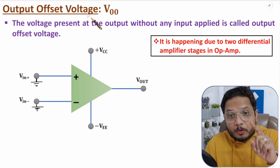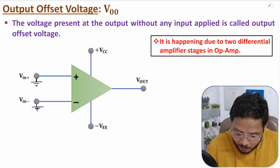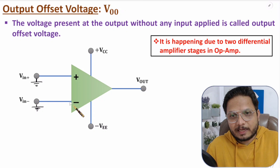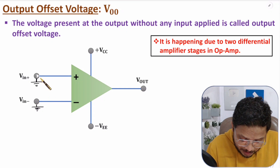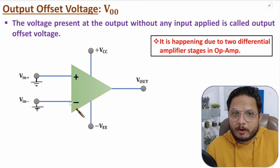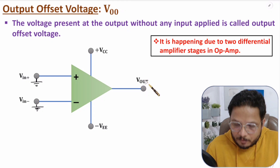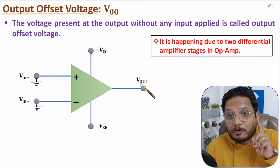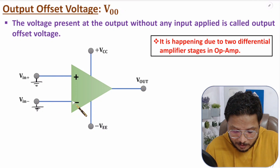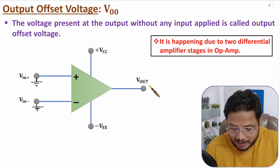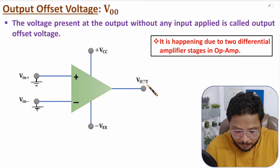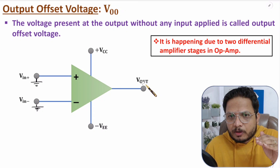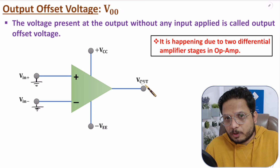Ideally, output offset voltage should be zero. The reason is output equals gain multiplied by the difference between the two input signals. If both terminals are connected to ground, then the difference is zero, so gain into difference — that is the output — should ideally be zero. But because of some imperfections, there will be some output, and that is output offset voltage.